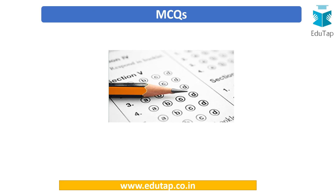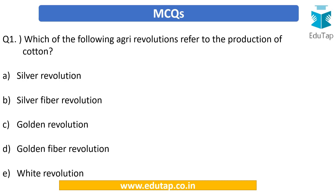Let us start with the MCQs first. Try to solve them. If you know the answer, mark your score below; if you don't, don't worry — we will cover the concepts and then the solutions. Question number 1: Which of the following agri revolutions refers to the production of cotton? Go through the options and try solving it.